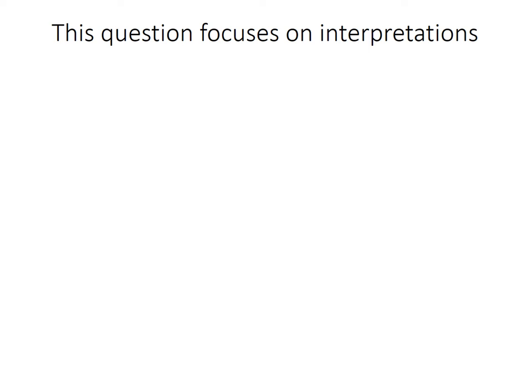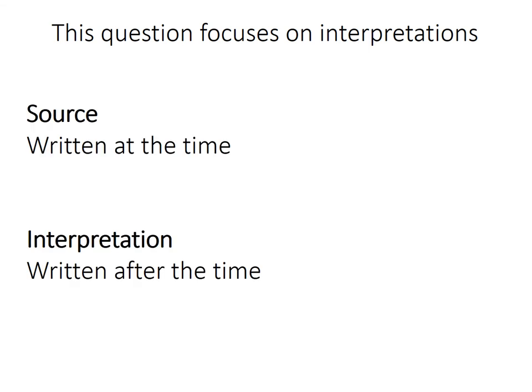This question focuses on interpretation, so before I look at the question I want to talk about the differences between a source and an interpretation. A source is always written at the time — it's something from the time period being studied, so for the Normans it would be written during or very shortly after the Norman reign. An interpretation is something written a long time after the period it is writing about. For example, if I wrote something about the Second World War 60 or 70 years later, that would be an interpretation. It is a conscious construction of a past event.